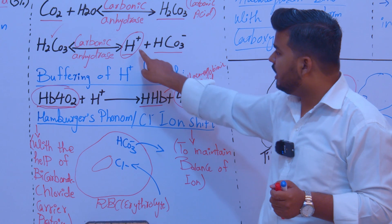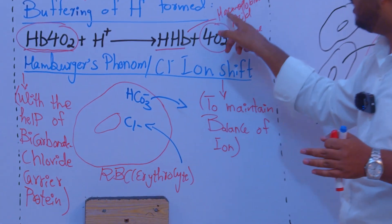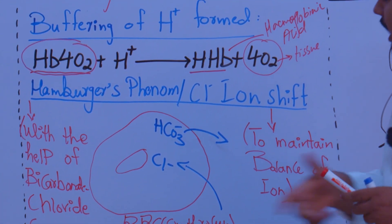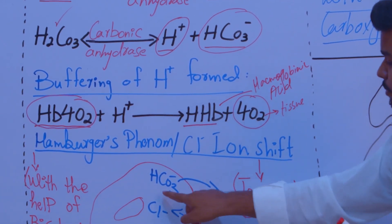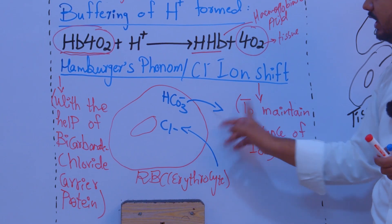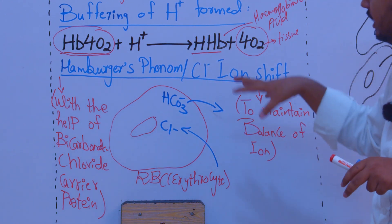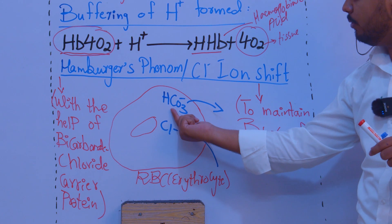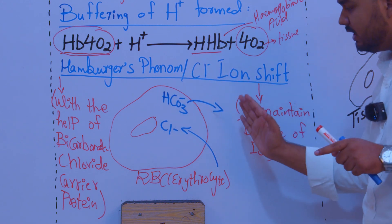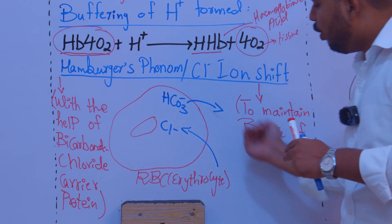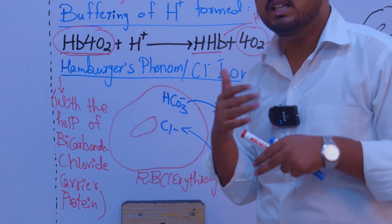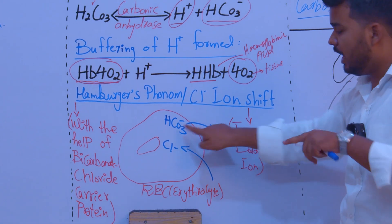Inside the red blood cell, hydrogen ions are buffered by the formation of hemoglobinic acid. The other product, bicarbonate ions, moves from inside the red blood cell to outside into the plasma. In the opposite direction, chloride ions (Cl-) move from outside into the red blood cell to maintain ionic balance.